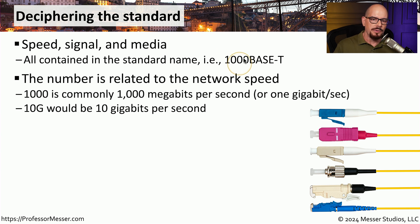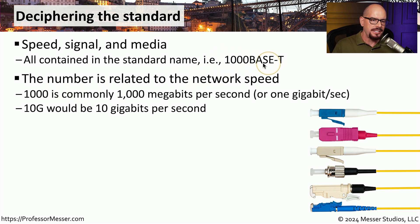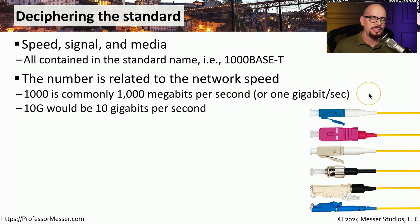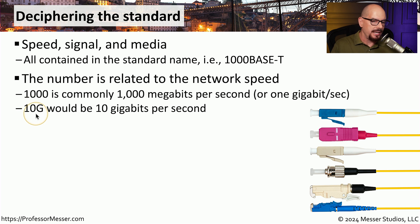The number used in the name of the standard is often related to the speed of the standard itself. For example, in 1000BASE-T, that 1000 refers to 1000 megabits per second, or 1 gigabit per second overall speed. If this standard started with 10G, then it would be related to a 10 gigabit per second network.